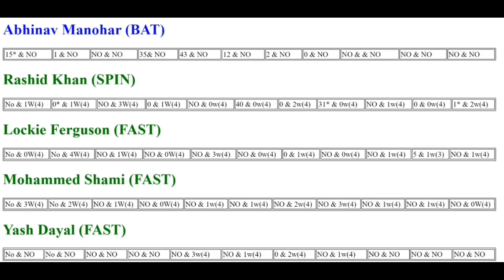Ferguson and Mohammad Shami are both fast bowlers. Shami has had a good recent match and good figures of 2-3. He's been good in the last match, and Ferguson has also been good. Both are key bowling options for Gujarat.